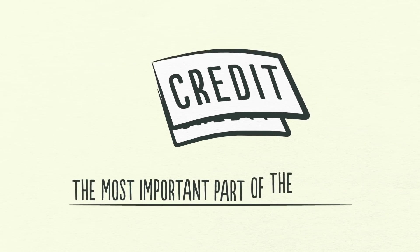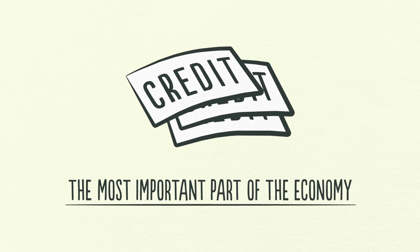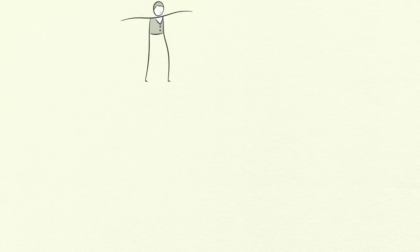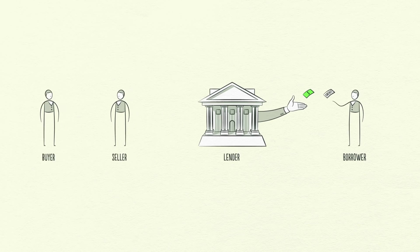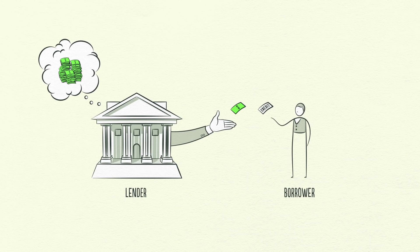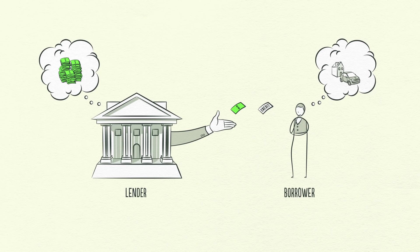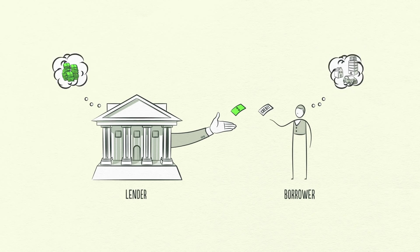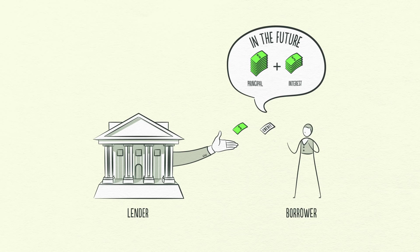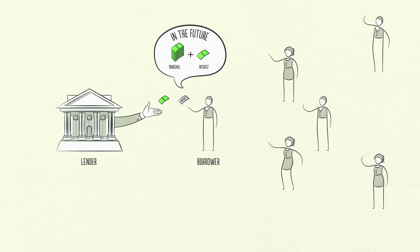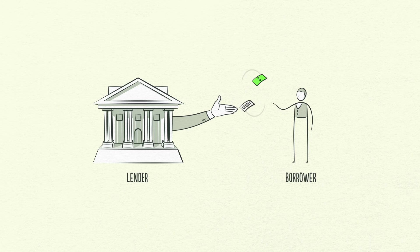Credit is the most important part of the economy and probably the least understood. It's the most important part because it's the biggest and most volatile part. Just like buyers and sellers go to the market to make transactions, so do lenders and borrowers. Lenders usually want to make their money into more money, and borrowers usually want to buy something they can't afford, like a house or a car, or they want to invest in something like starting a business. Credit can help both lenders and borrowers get what they want. Any two people can agree to create credit out of thin air.